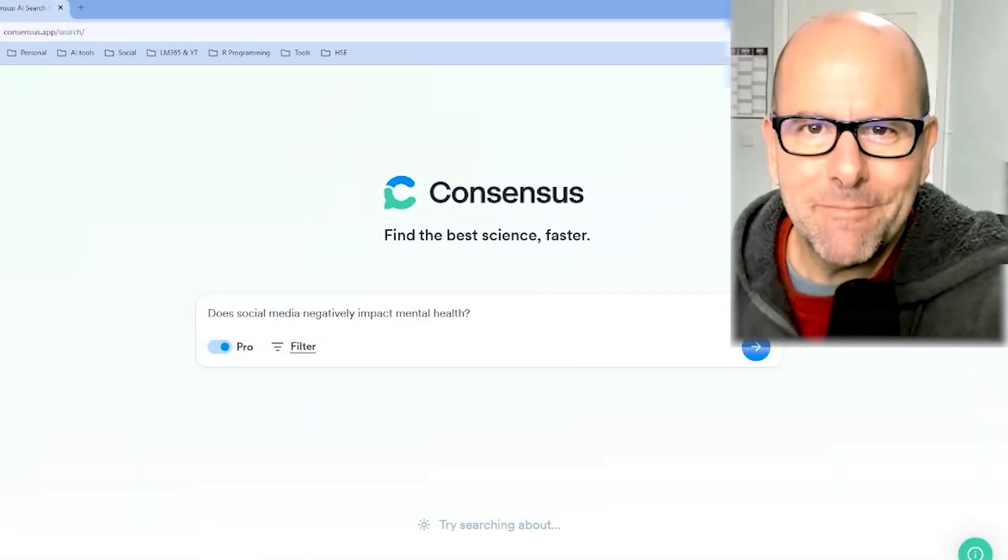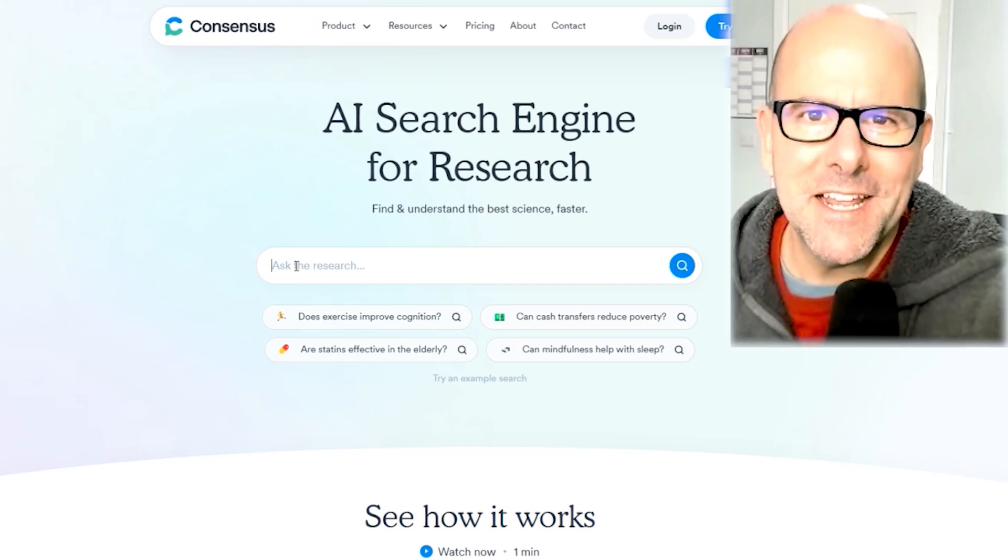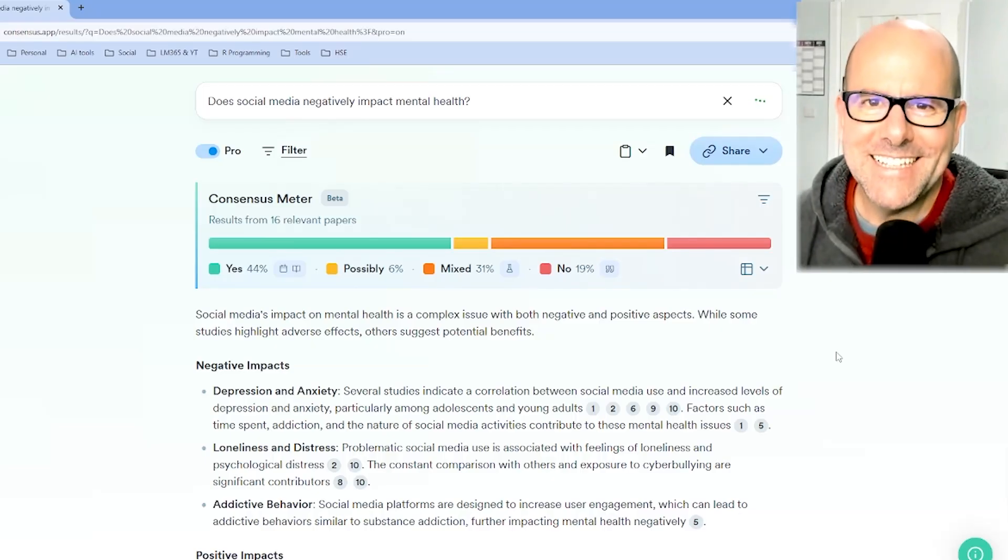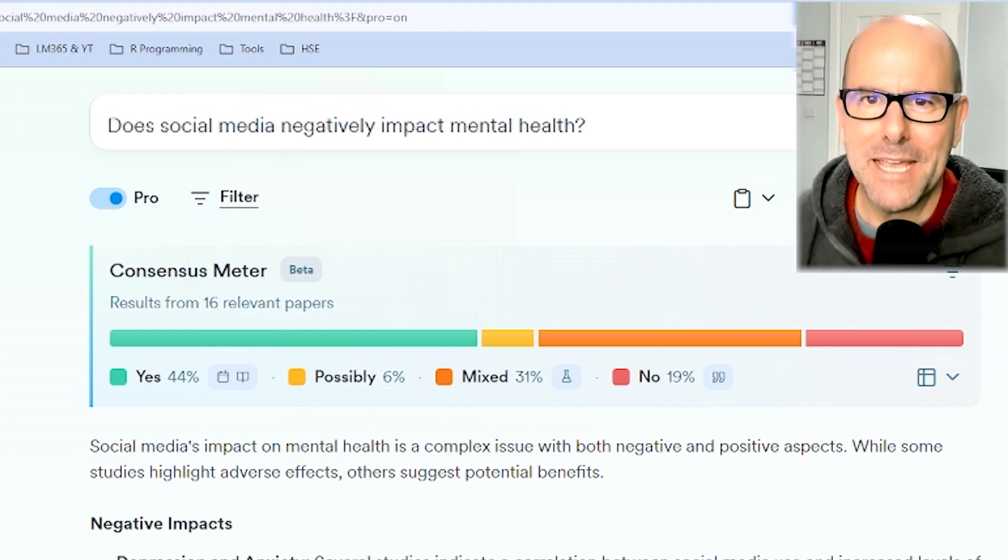If you do any kind of research, I am about to blow your mind. Watch this. I've come to ConsenSys and I've put in my research question. And what I want to know is what is in the literature. ConsenSys is an AI search engine for research. I've asked the question, does social media negatively impact mental health? Let's see what ConsenSys says.